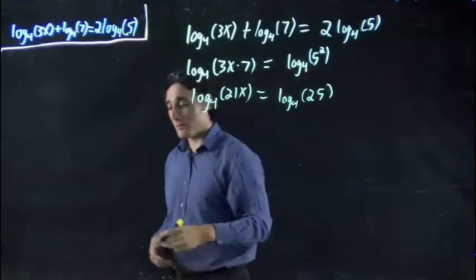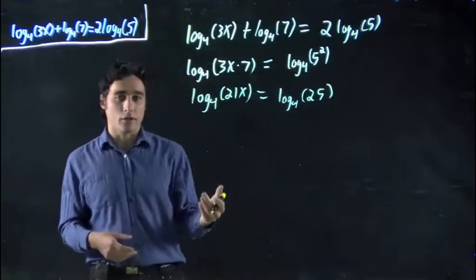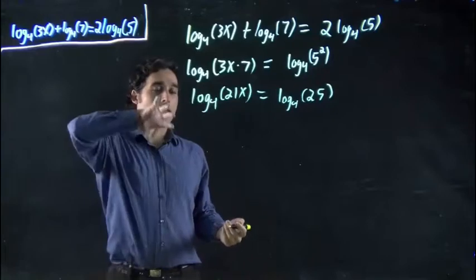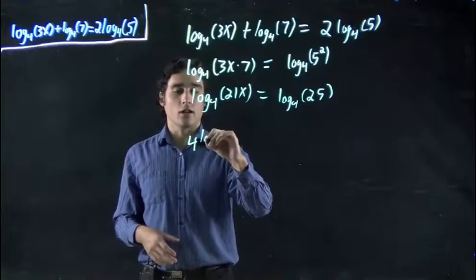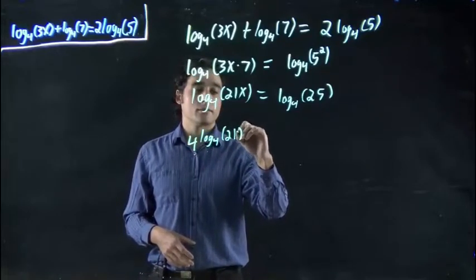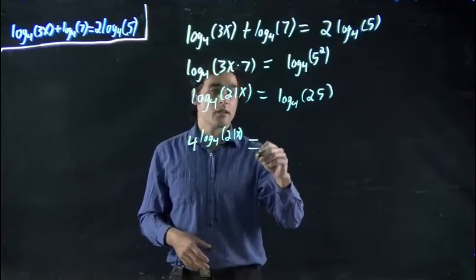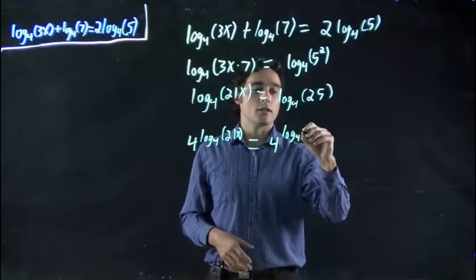And what we're going to do is take advantage of our knowledge of exponents and logarithms and how they work. So we're going to put 4 to the power of both sides. So we're going to rewrite this as 4 to the log 4 of 21x—don't forget my x. That's equal to 4 to the power of log 4 of 25.